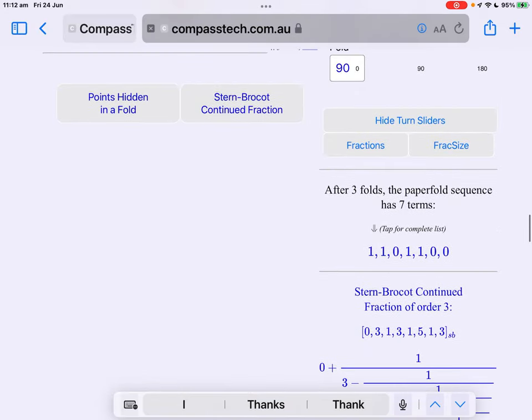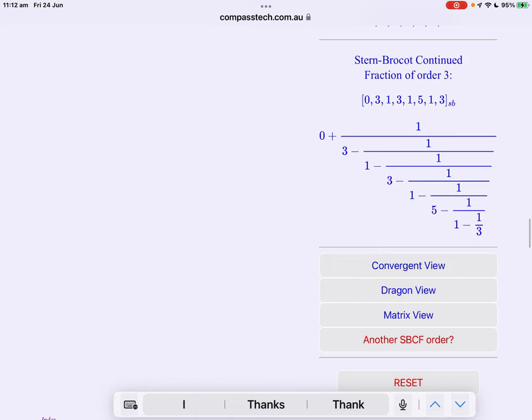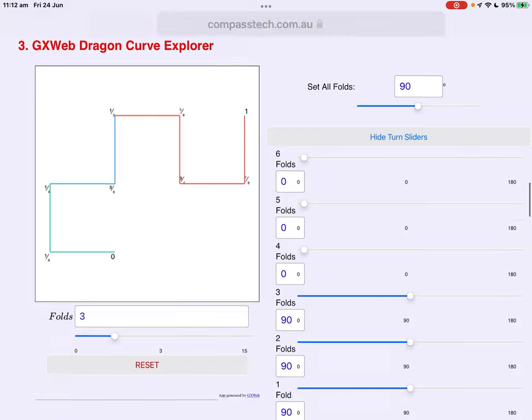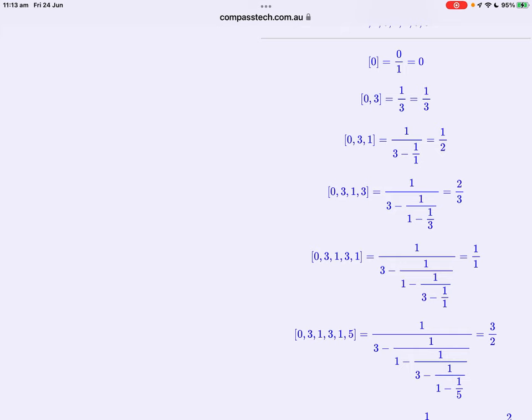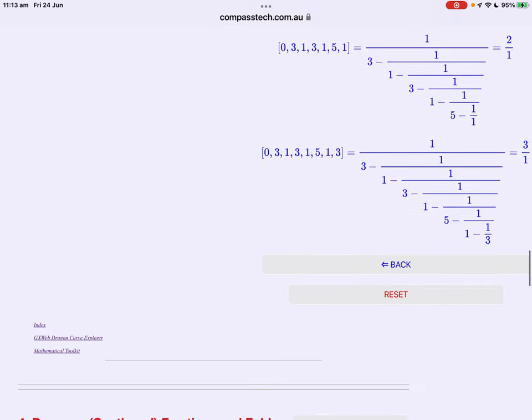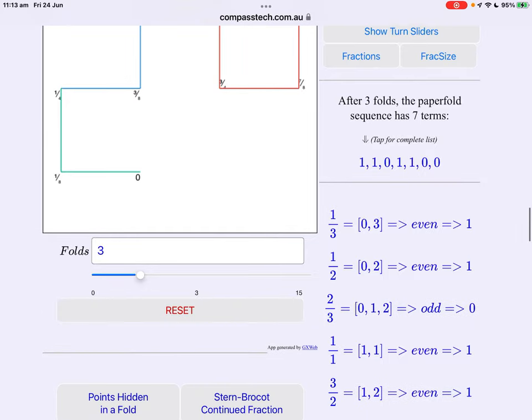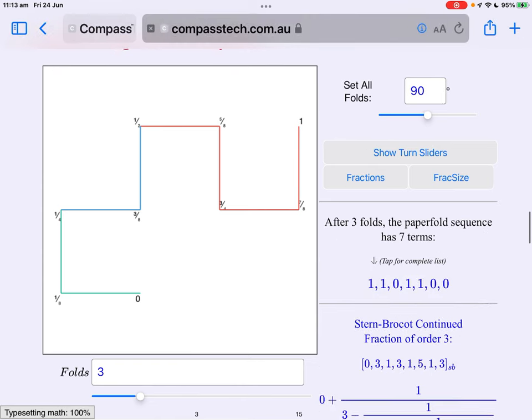Alright, after three folds paper fold sequence has seven terms, one one zero one one zero zero. The Stern-Brocot continued fraction of order three, there's eight terms but leaving out the zero we get our seven terms. Now the convergent view as we just talked about, if you slice at each step of the continued fraction you get that sequence, one third, a half, two thirds and so on. Let's hide those. Now the dragon view says the continued fraction for each convergent is either even or odd in number. Those give us the terms of the paper fold sequence.